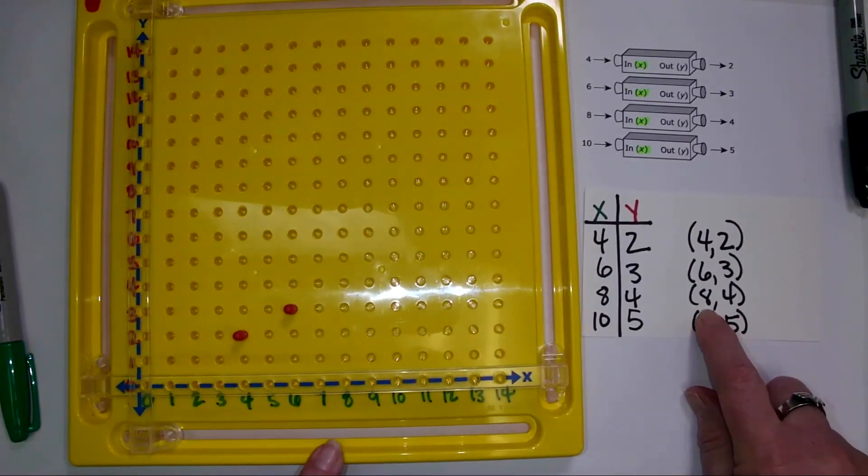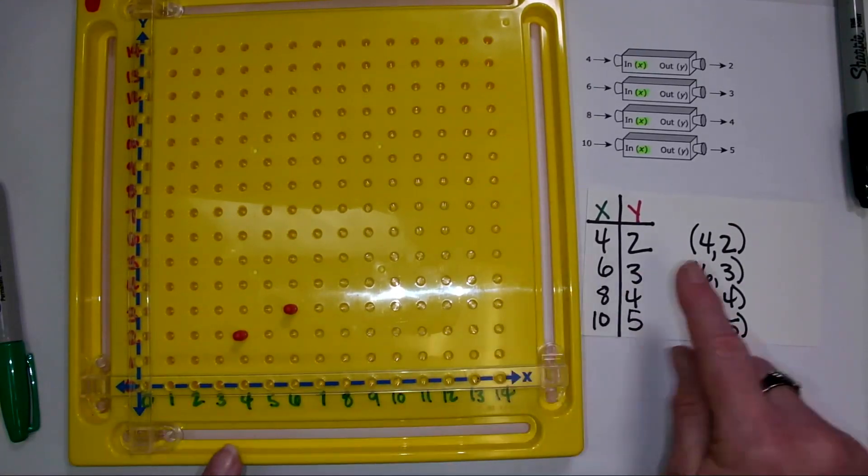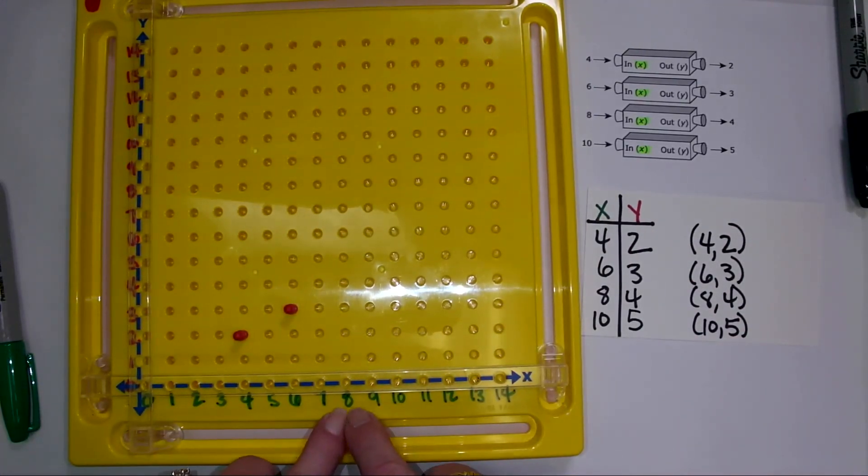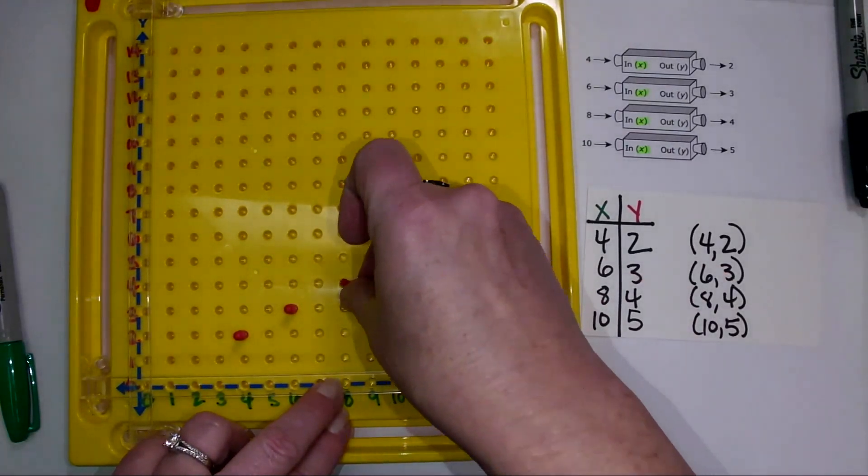And then I'm going to have 8, 4. Eight is on my x axis, it's green. Eight is first. And then I'm going to count up 1, 2, 3, 4.